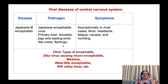Japanese B encephalitis is caused by Japanese encephalitis virus, with domestic pigs and sometimes cranes and flamingoes as primary hosts. Symptoms are fever, headache, fatigue, nausea, and vomiting. Other viruses also cause encephalitis, including Zika virus causing microcephaly, measles virus, West Nile encephalitis, and Rift Valley fever — all are examples of viral diseases of the central nervous system.